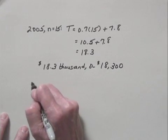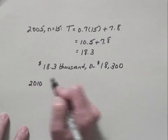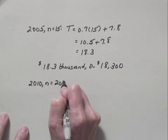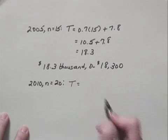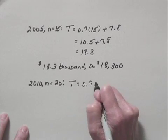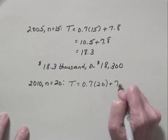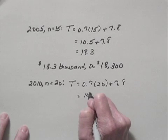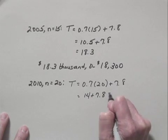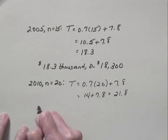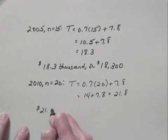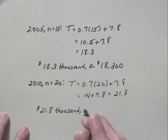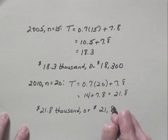The last year we look at is 2010. 2010 is 20 years after 1990, so N equals 20. Substituting in the equation, T equals 0.7 times 20 plus 7.8. 0.7 times 20 is 14, so we have 14 plus 7.8, which equals 21.8. That tells us the tuition is projected to be $21,800.